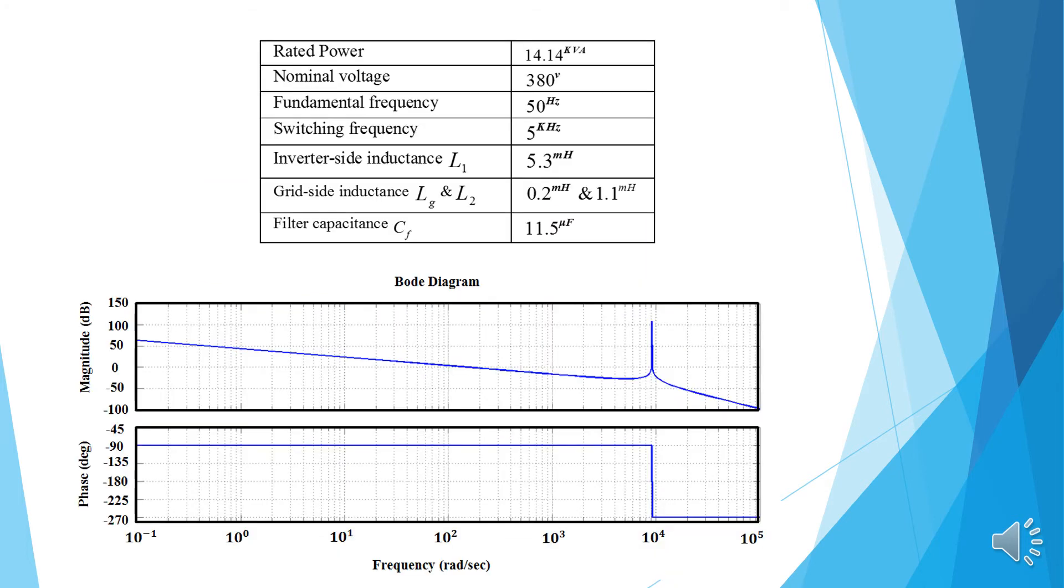Nominal values of the system and LCL parameters extracted by PSO algorithm are illustrated in this table. As shown in both diagram, LCL filter creates a resonance frequency in 1.5 kHz.